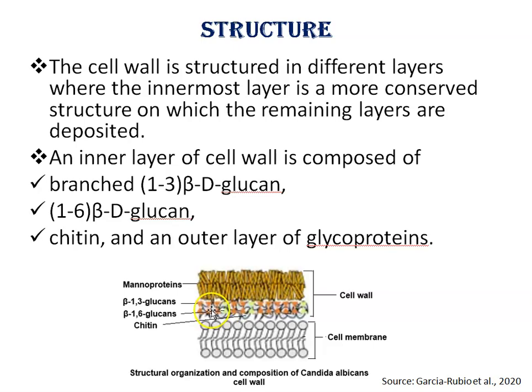The inner layer of the cell wall in most fungi is composed of branched 1,3-beta-glucan with both 1,6-beta-glucan and some of the chitin connected to the non-reducing ends of the 1,3-beta-glucan, and an outer layer of glycoproteins.